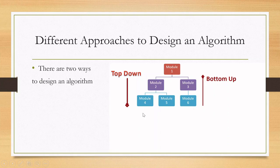This is the diagram for the top-down approach. The main module is divided into module 2 and module 3. Module 2 is again divided into modules 4 and 5, and module 3 is divided into module 6. So the main module is divided into a number of sub-modules, and processing starts from top to bottom. This is called the top-down approach.